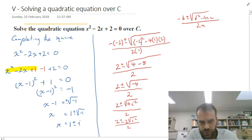Now we can divide the 2s. So we can divide 2 by 2, divide 2 by 2. So that's going to be, I'm just going to move up here a little bit, it's going to be 1 plus or minus the square root of i squared, which is going to be 1 plus or minus i.